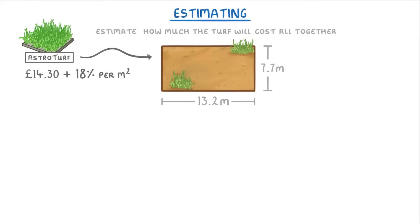The first thing we need to do here is to estimate the area of the garden, which we can do by rounding up our width of 7.7 metres to 8 metres, rounding down our length of 13.2 metres to 13 metres, and then multiplying the width by the length to get an area of 104 square metres.